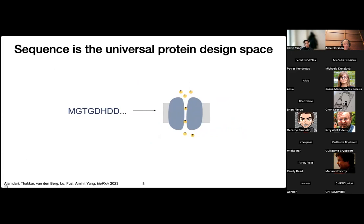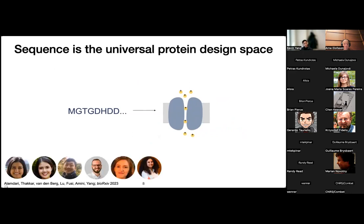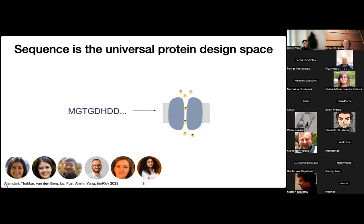This paper is joint work between a fairly large group of people at MSR. It was led by Sarah Amdari, who's the first person on the left, with major contributions also from Nithya Bakar, who was an intern at MSR. We also worked closely with other researchers such as Alex Lu, Nicola Fusi, Ray Vandenberg, and Avin. This is now available as a preprint — I think there's a link on the last slide. We call our model EvoDiff for evolutionary scale diffusion.